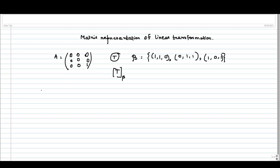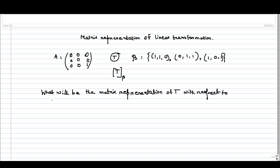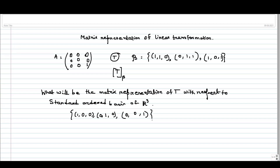Now my question is: what will be the matrix representation of T with respect to the standard ordered basis of R³? Here everything is in R³, so the standard ordered basis of R³ is {(1,0,0), (0,1,0), (0,0,1)}. So we have to find the matrix representation of T with respect to the standard ordered basis, and we will start with the given representation.